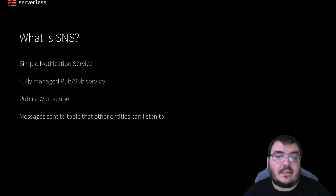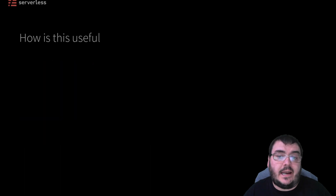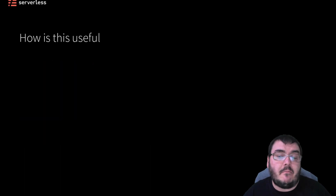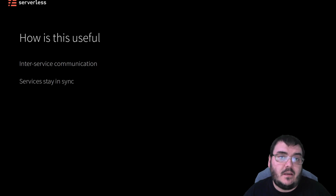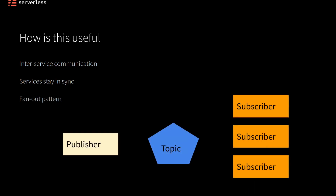In other words, one entity publishes and at least one other entity is subscribed to messages in that topic. This becomes really useful in our project where we will potentially have many services and we want these services to stay in sync with one another by sending messages. This creates a pattern called fanout — one service generates a message and it gets automatically replicated out to whoever is listening.